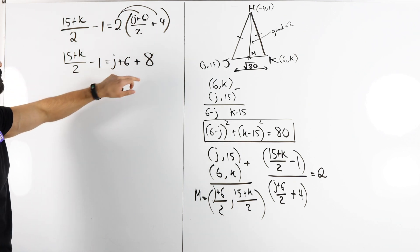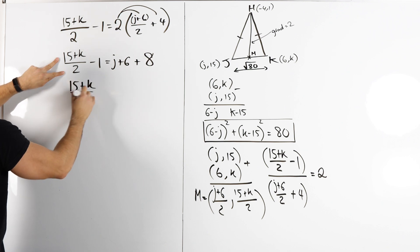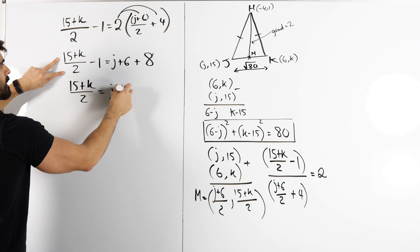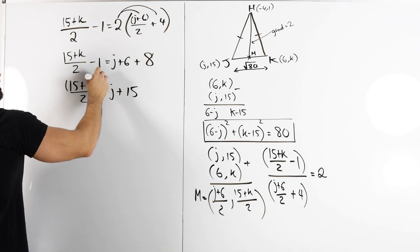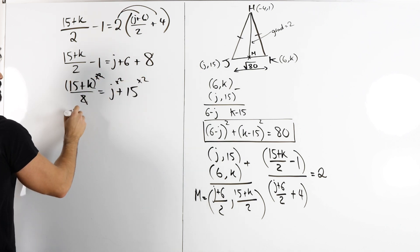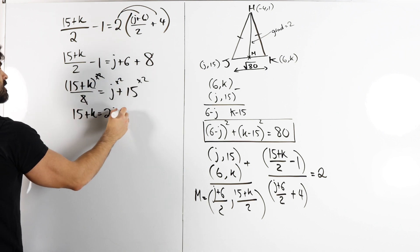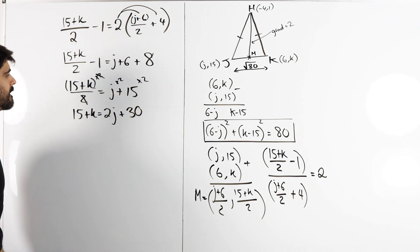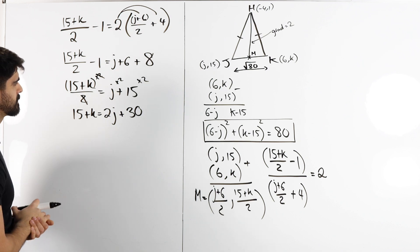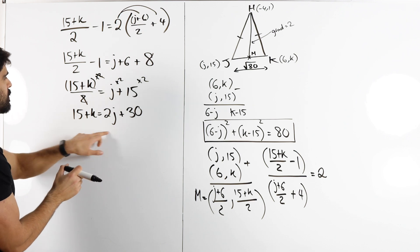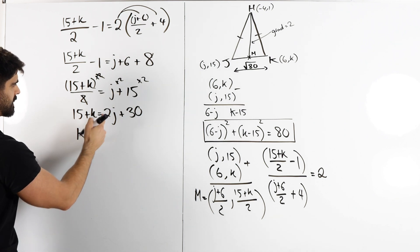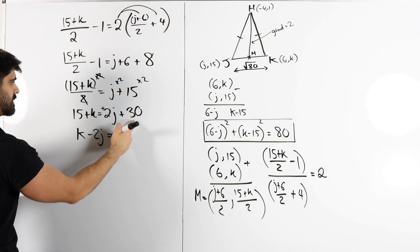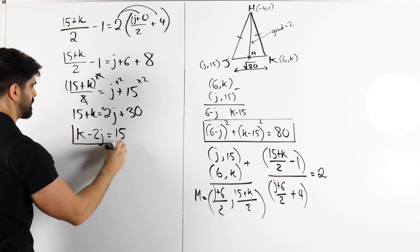Can we move the 1 over to isolate this? We have (15+K)/2 is J+6 plus 8 is 14. Add the 1, 15. Then should we times everything by 2? We get 15+K is 2J+30. And then we're just going to rearrange. I'm going to bring the 2J here and the 15 goes there. So we get K minus 2J is 30, subtract 15. That's going to leave us with 15.